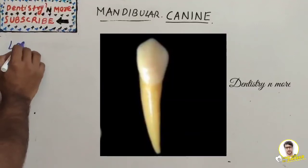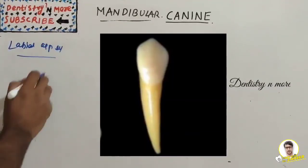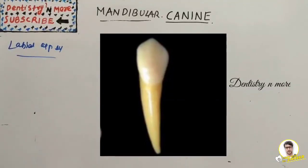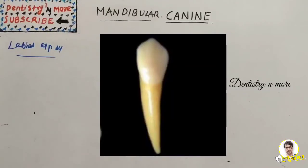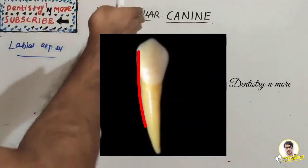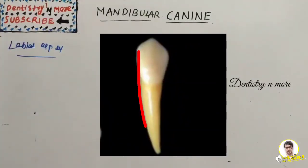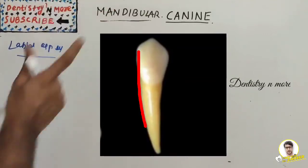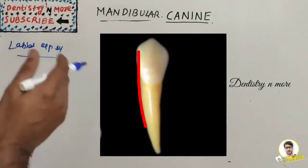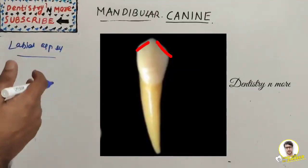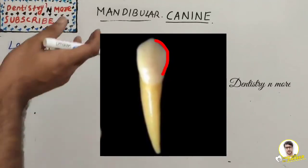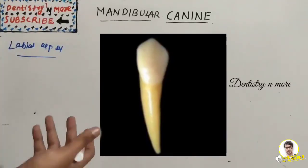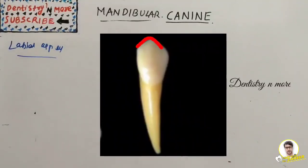For the labial aspect: mandibular canines are similar to maxillary canines except they are slightly narrower mesio-distally — comparatively smaller than the maxillary canine. The mesial outline of the crown is straight and in line with the mesial outline of the root, whereas in the maxillary canine the crown is a little bulkier so it won't align. The mesial cusp slope is smaller than the distal cusp slope, with a straight and obtuse mesio-incisal angle, while the distal outline is convex with a rounder disto-incisal angle. The incisal edge is not as sharp as the maxillary canine.